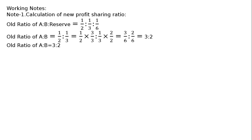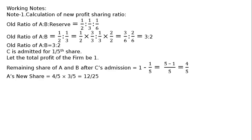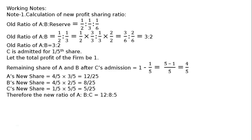Reserve is not a partner — it was carried and now it goes off. C is admitted for 1/5 share. Let the total profit of the firm be 1. Remaining share of A and B after C's admission is 1 − 1/5 = 4/5. This 4/5 is shared among A and B in the old ratio 3:2, giving A = 12/25 and B = 8/25. C's share is 1/5 = 5/25. Therefore, the new ratio of A : B : C = 12 : 8 : 5.